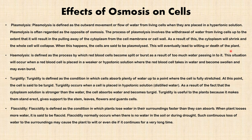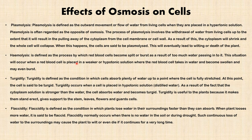Number two: haemolysis. Haemolysis — from 'haemo' meaning blood — is the process by which red blood cells split or burst open as a result of too much water passing into them. This occurs when red blood cells are placed in a weaker or hypotonic solution — a solution in which the concentration of the cell is greater than the concentration of the environment. Water flows from the environment into the cell causing the red blood cell to swell and eventually burst. This is called haemolysis.